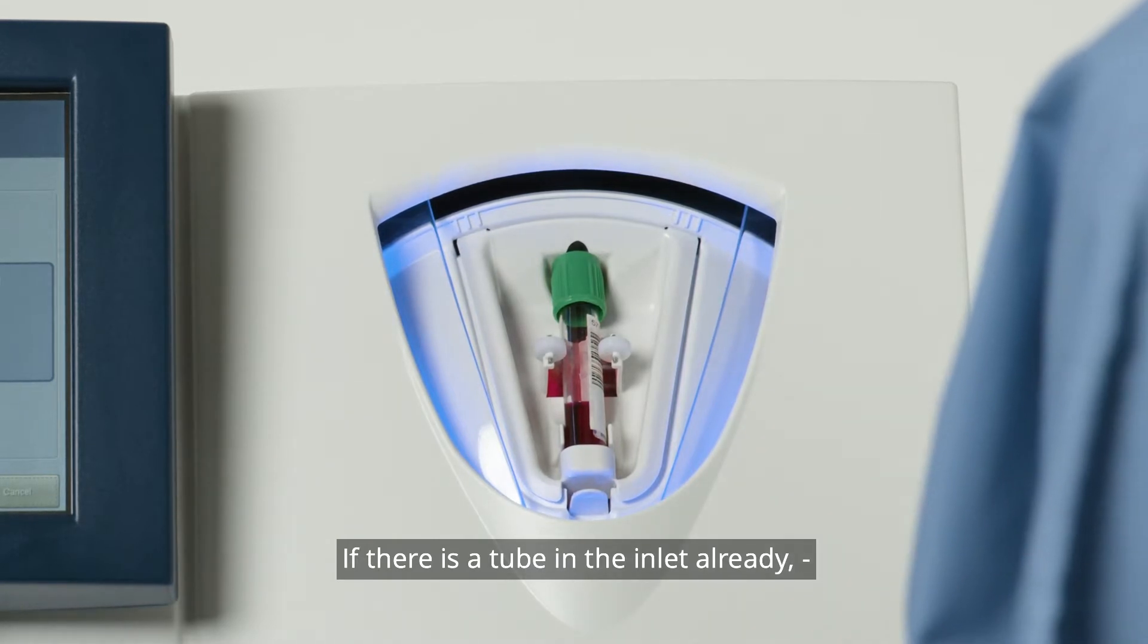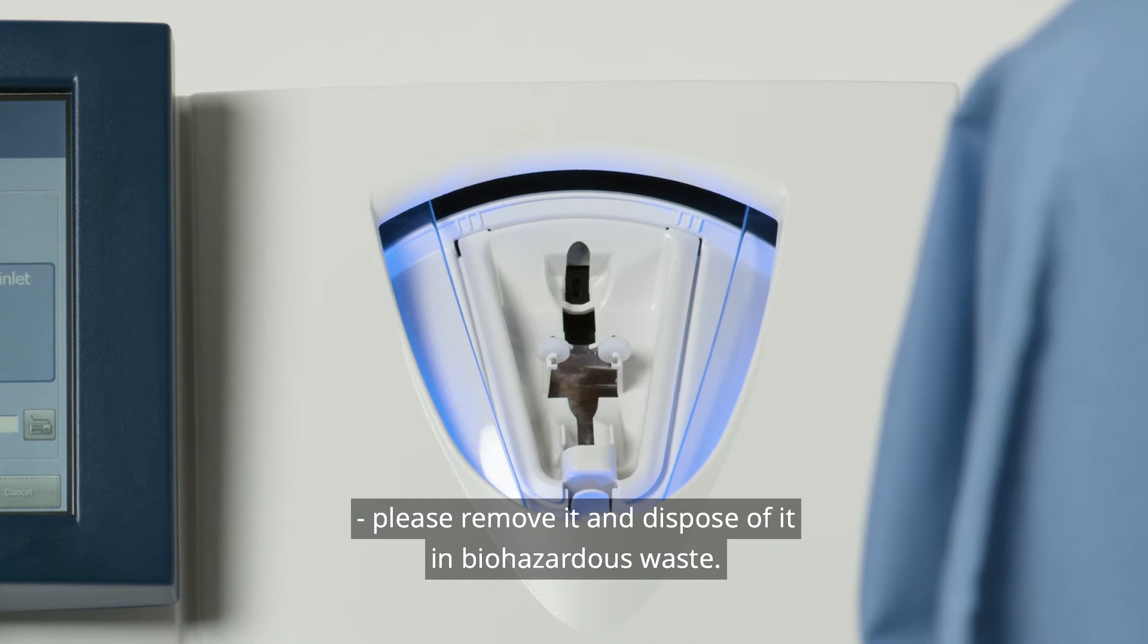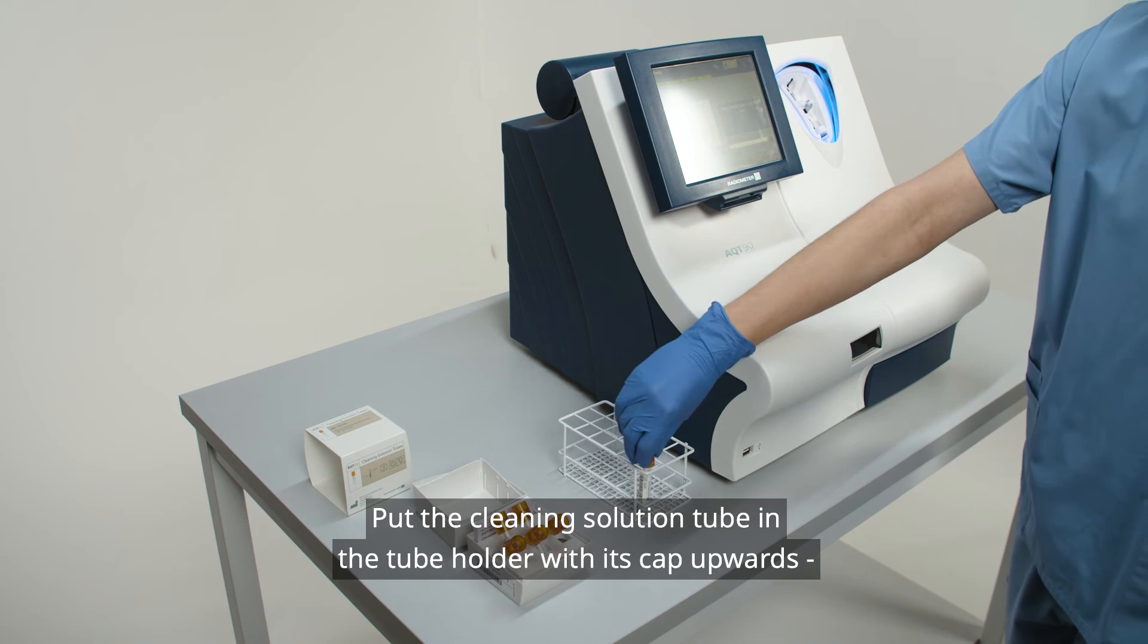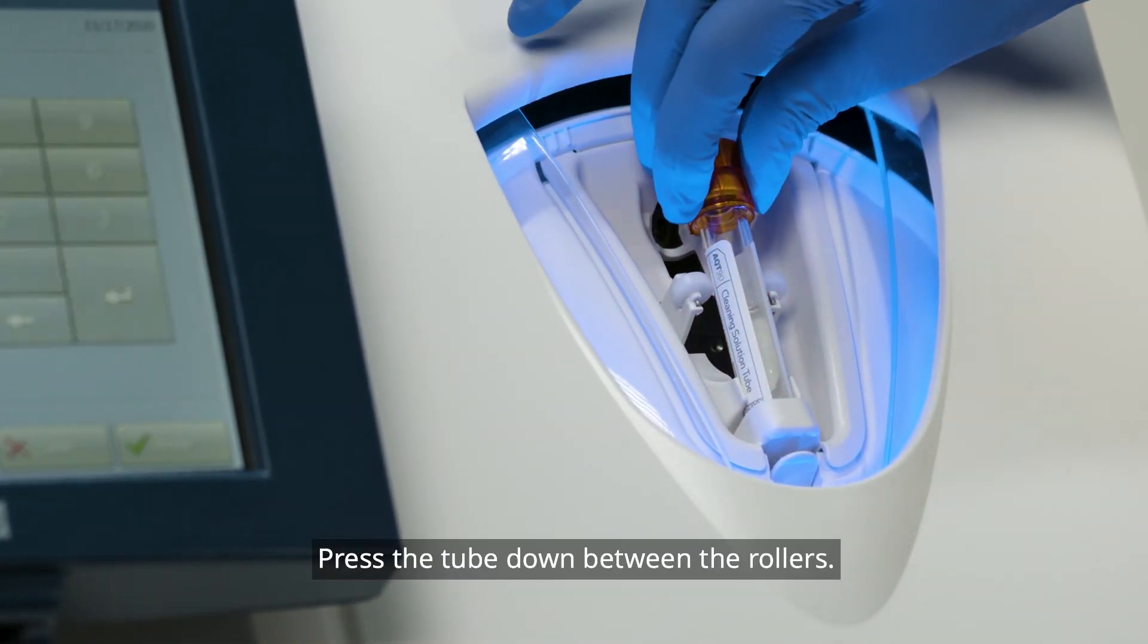If there is a tube in the inlet already, please remove it and dispose of it in biohazardous waste. Put the cleaning solution tube in the tube holder with its cap upwards and the barcode facing the analyzer. Press the tube down between the rollers.